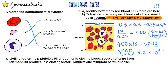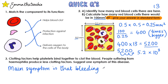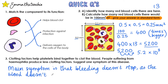Number three: clotting factors help platelets bind together to clot the blood. People suffering from haemophilia produce fewer clotting factors — suggest one symptom of this disease. The main symptom is that bleeding doesn't stop, as the blood doesn't clot properly. You could also have suggested specific examples such as nosebleeds that don't stop, bleeding gums, bruising easily, or internal bleeding.